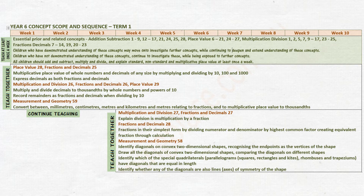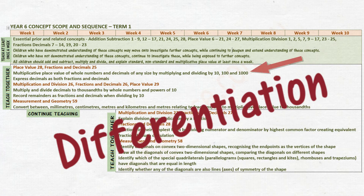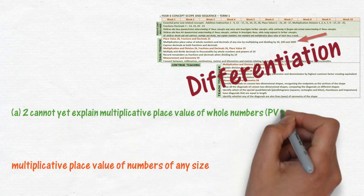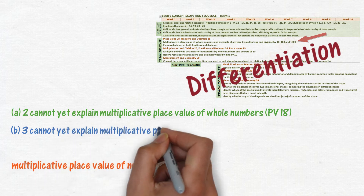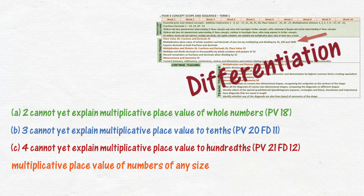Some students may be ready to investigate new concepts before others. This will require differentiation. For example, you want to begin teaching multiplicative place value of numbers of any size. All students can engage in the explicit teaching segment of the lesson. What does differentiation using these sample levels of understanding look like? The explicit teaching segment of the lesson covers the levels of concepts that students will be investigating.